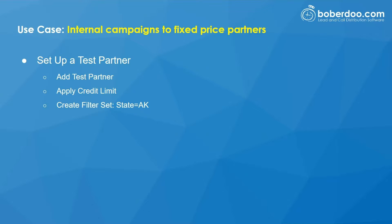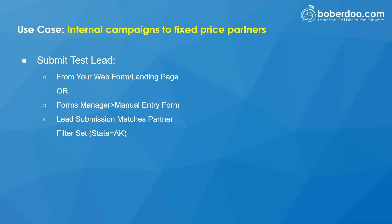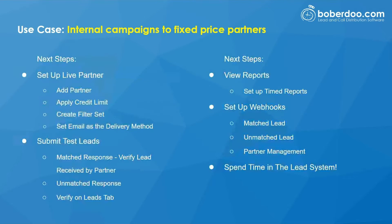Then submit a test lead — you can either do that through your web form or through the forms manager manual entry form. Make sure your lead submission matches that partner's filter. In terms of next steps, you can set up a live partner — again, make sure you apply the partner credit limit and create a filter set with email as the delivery method.